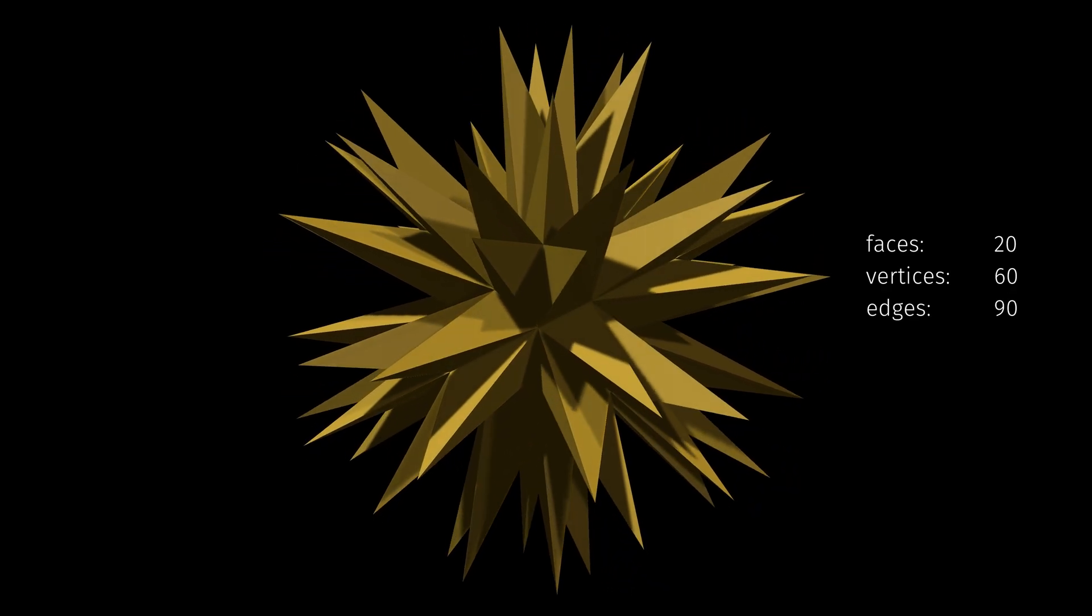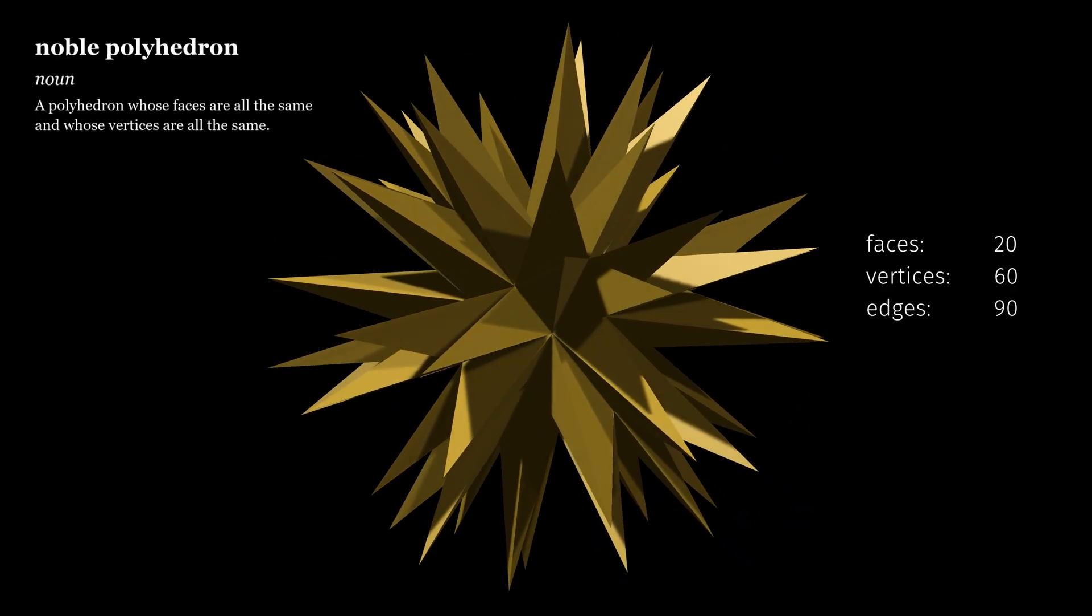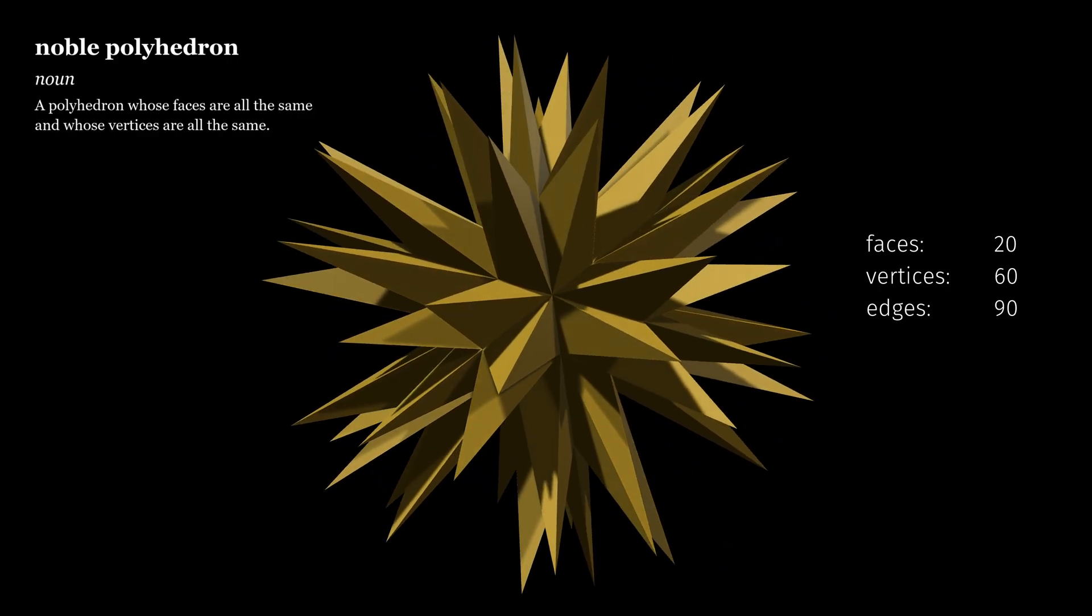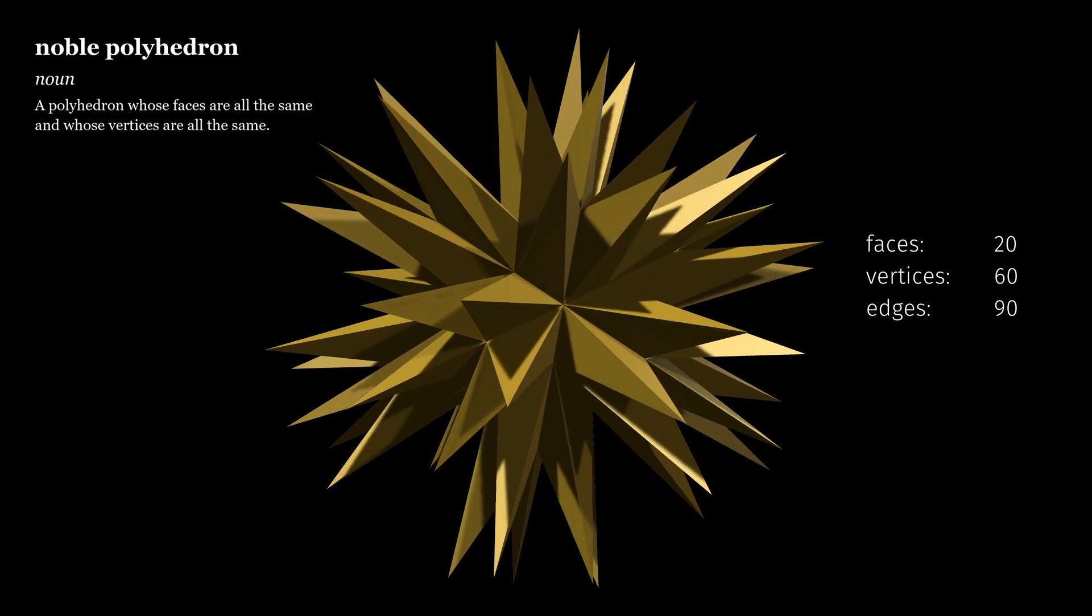That makes this an example of a noble polyhedron, one of a small and beautiful family that are both isohedral and isogonal. I hope to explore these lesser known shapes more fully in future.